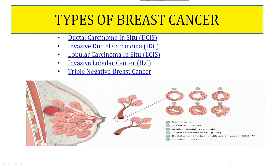There are different types of breast cancer: ductal carcinoma in situ, invasive ductal carcinoma, lobular carcinoma in situ, invasive lobular carcinoma, and triple negative breast cancer.